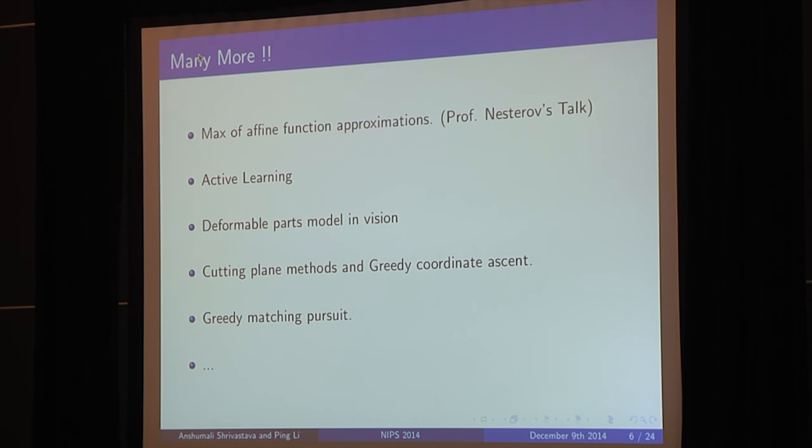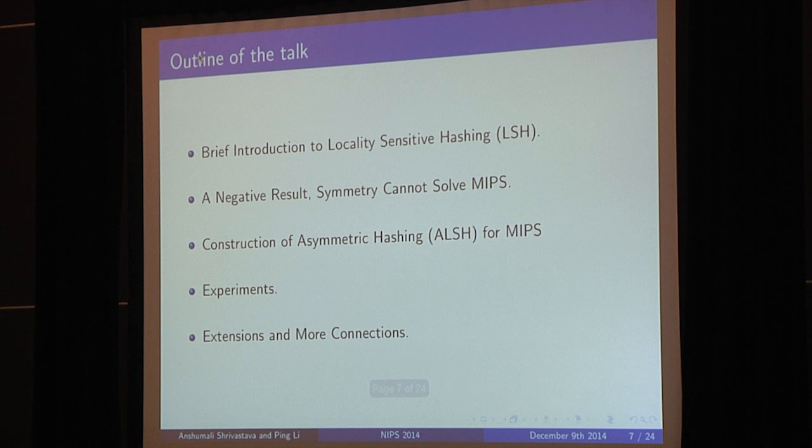So this is not same as the near neighbor search problem. And in fact, there are many more applications. For example, if you were in the Professor Nestro's talk, he was talking about max of affine function approximation, which is a maximum inner product search instance. Then there are other application, for example, in cutting plane, we want to find the most violated constraint, and all of them can be written as a maximum inner product search. Well, so hopefully, I have convinced you that this is a very important problem.